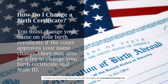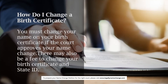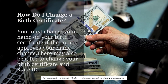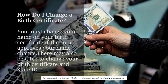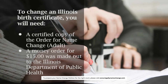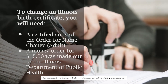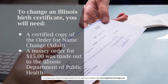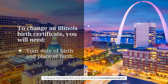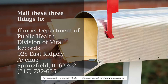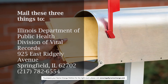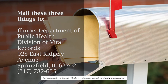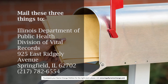How do I change a birth certificate? You must change your name on your birth certificate if the court approves your name change. To change an Illinois birth certificate, you will need: a certified copy of the Order for Name Change (adult), a money order for $15 made out to the Illinois Department of Public Health, and your date and place of birth. Mail these three things to: Illinois Department of Public Health, Division of Vital Records, 925 East Ridgely Avenue, Springfield, Illinois 62702.